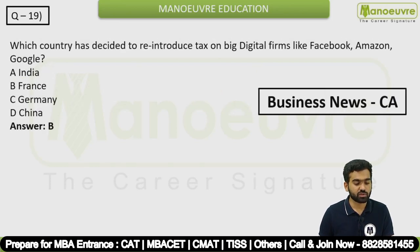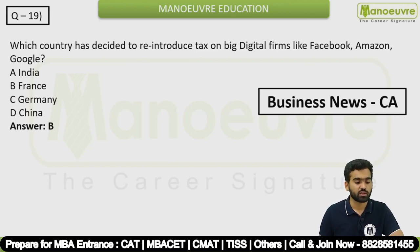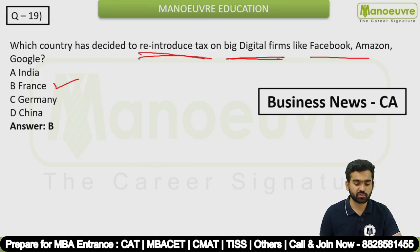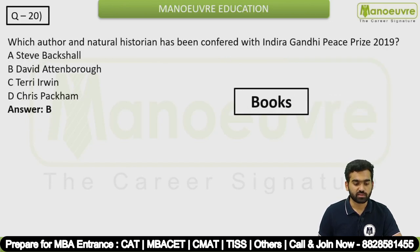Question 19: Which country has decided to reintroduce tax on big digital firms like Facebook, Amazon, and Google? The answer is option B — France. France has decided to reintroduce a tax on these big digital firms.